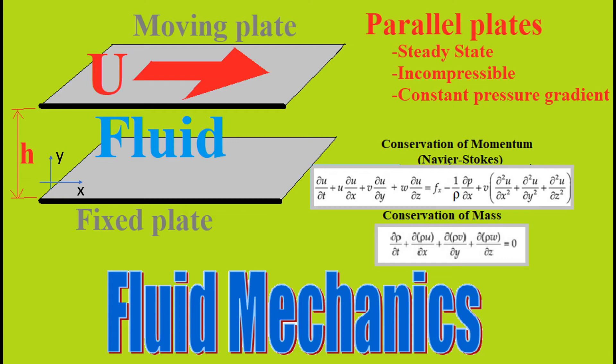Alright, hello everyone. Let's work on solving this fluid mechanics problem. We're going to use the conservation equations to help us figure out this setup. They are asking us to find the volumetric flow rate between two flat and parallel plates, while the bottom plate is stationary and the top plate is moving with a velocity U. We consider the distance between the plates as H, and the width of the plate as W.